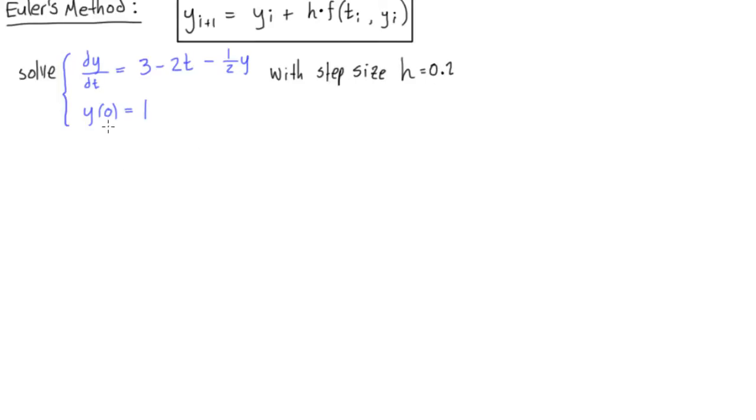So first of all, we need to identify that this here is going to be equal to our t naught, and this guy here is going to be our y naught. Right, this is our given initial conditions.